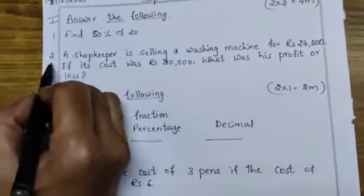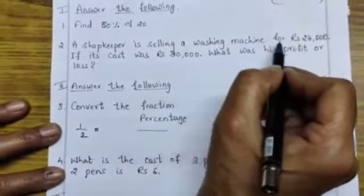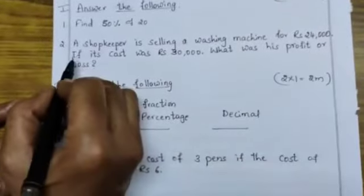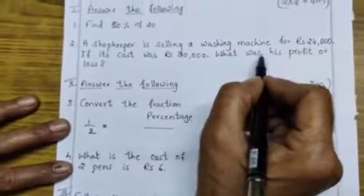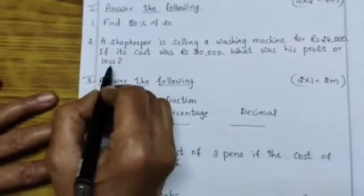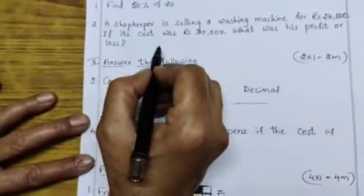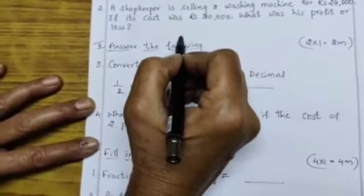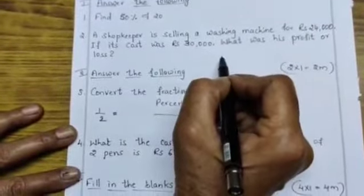Now second bit, a shopkeeper is selling a washing machine for Rs. 24,000. If its cost was Rs. 30,000, what was his profit or loss? If you get profit, write the profit formula and find the answer. If you got loss, write the formula and find the answer.